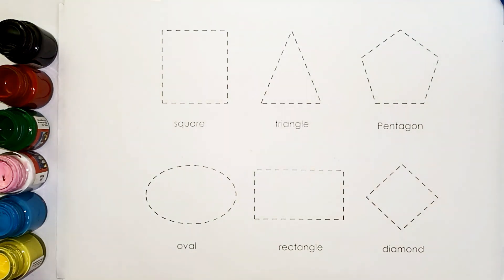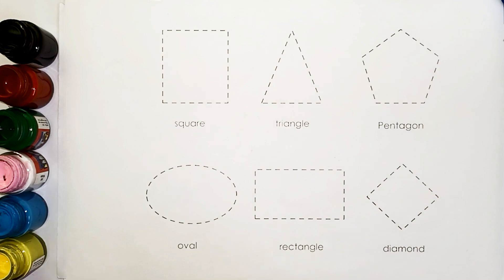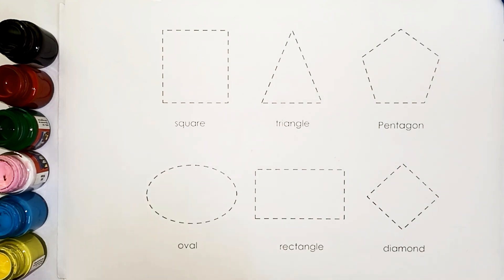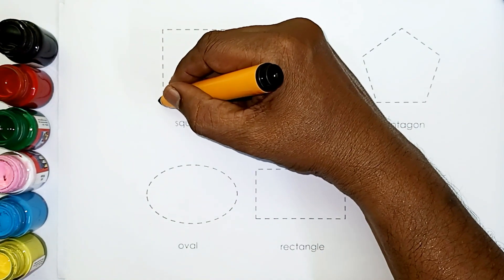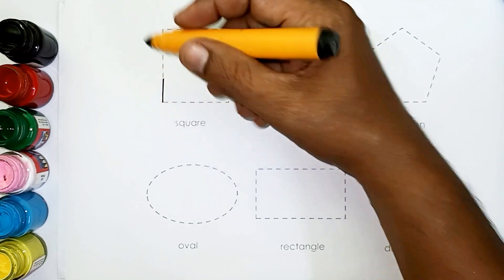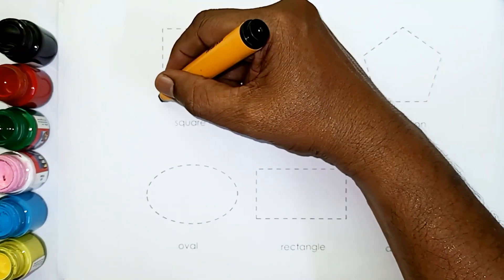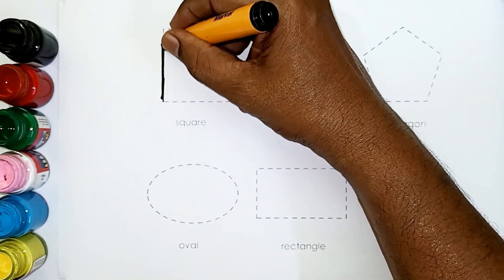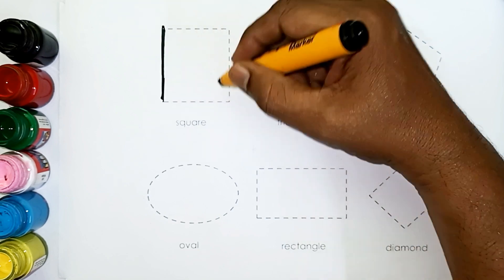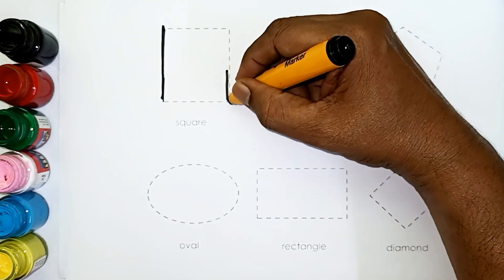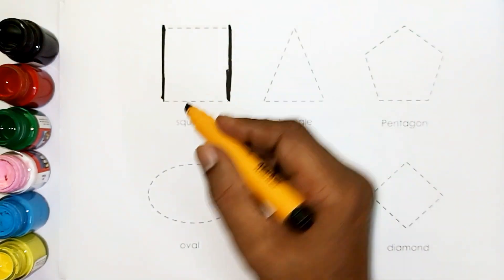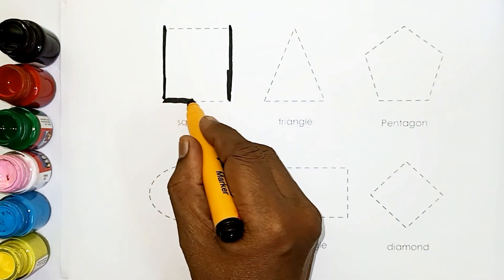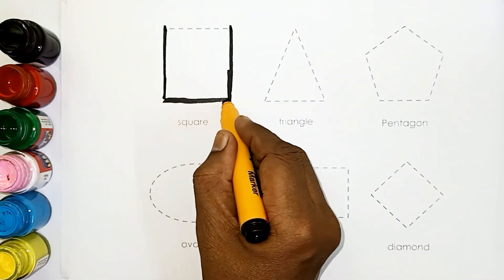Square shape. Square shape. So they all rolled over and one fell out. Four — there were four in a bed and the little one said, roll over, roll over. So they all rolled over and one fell out.